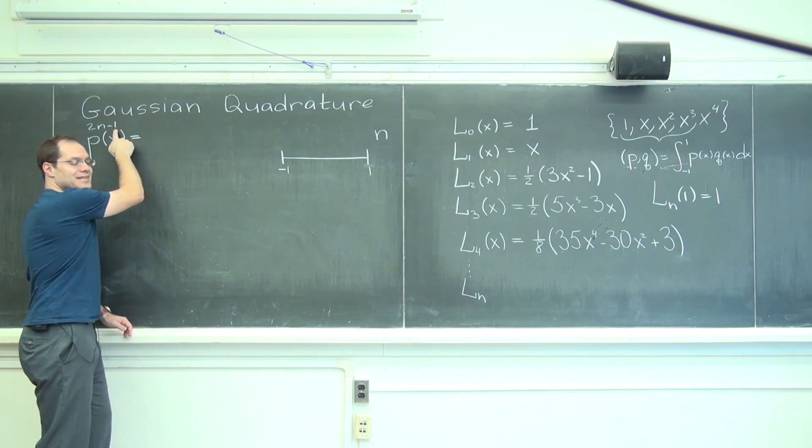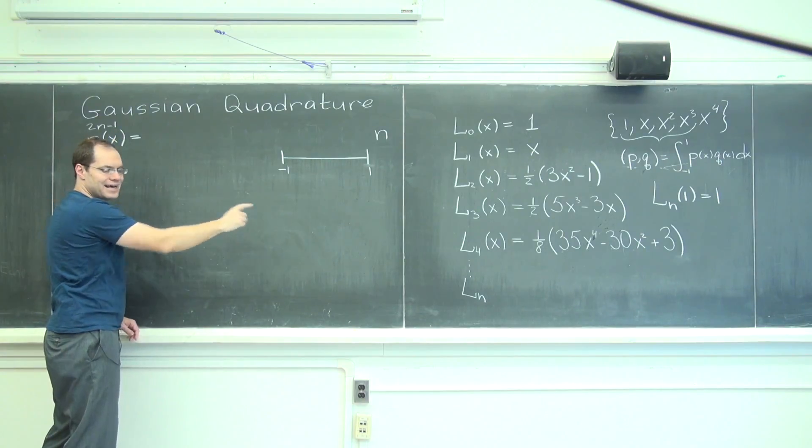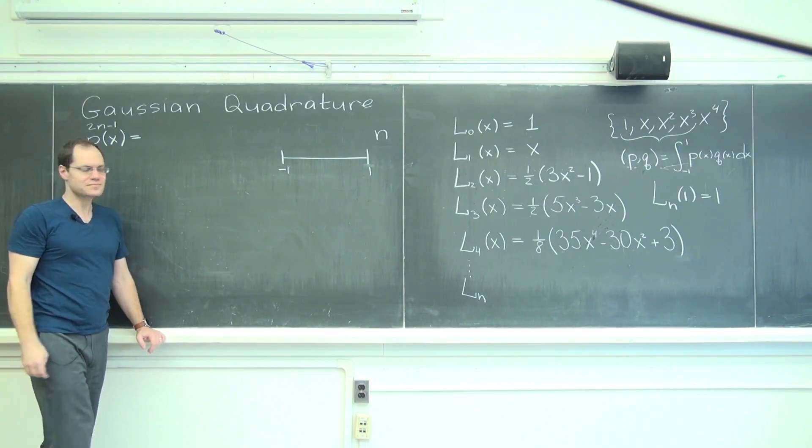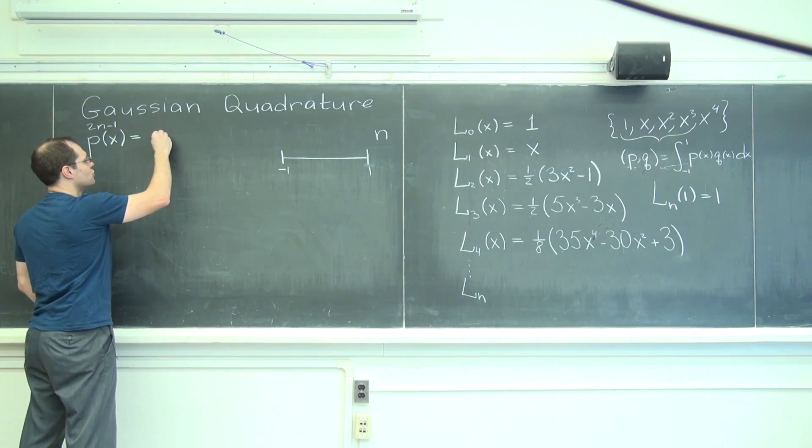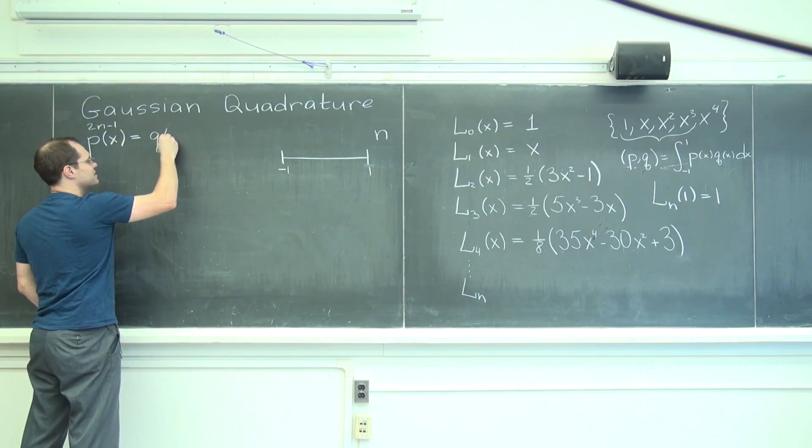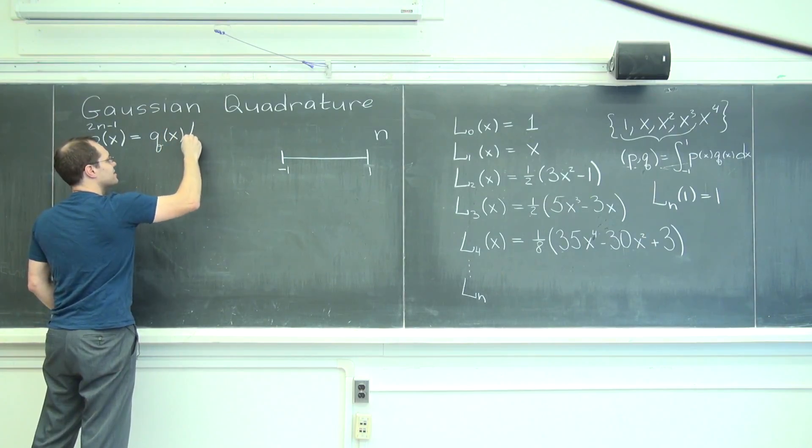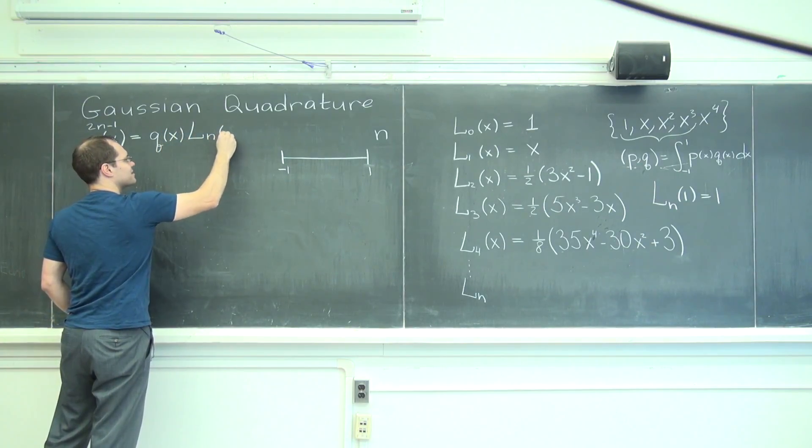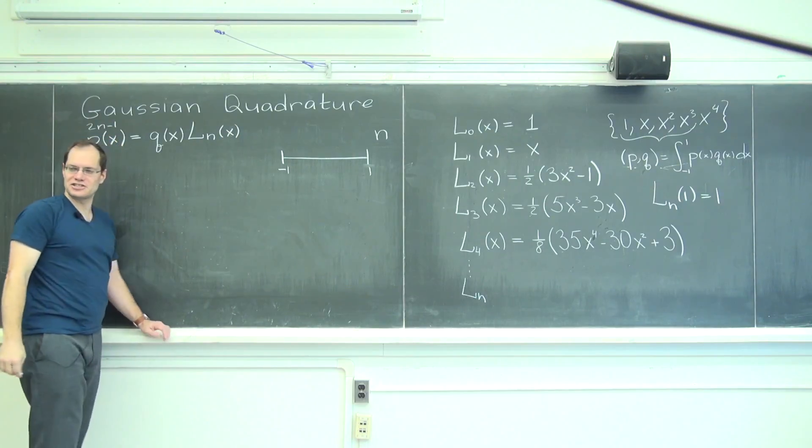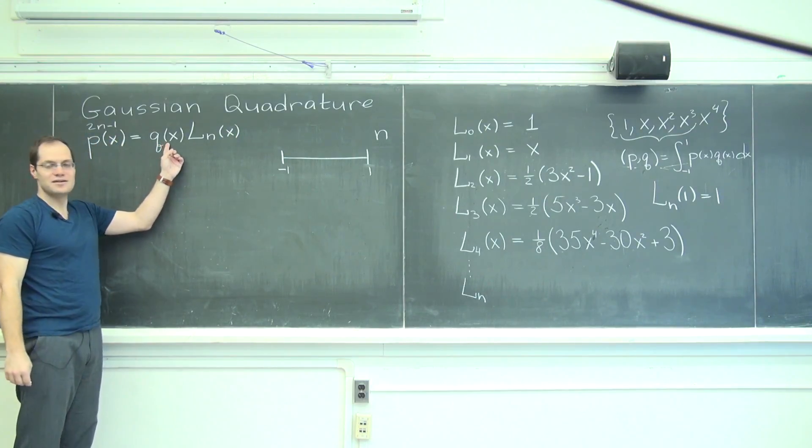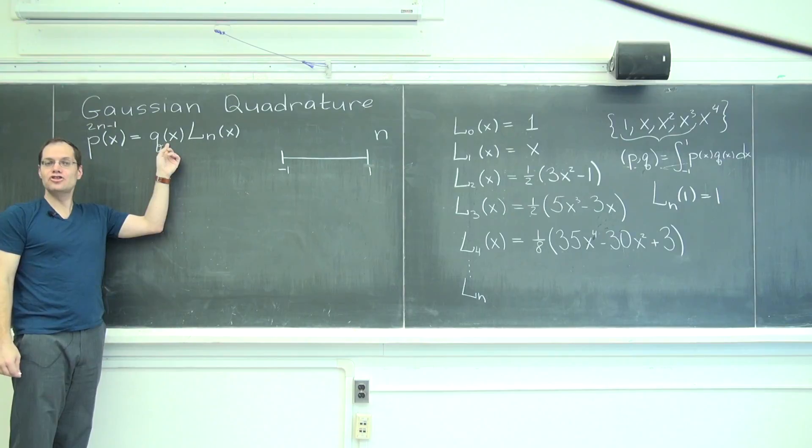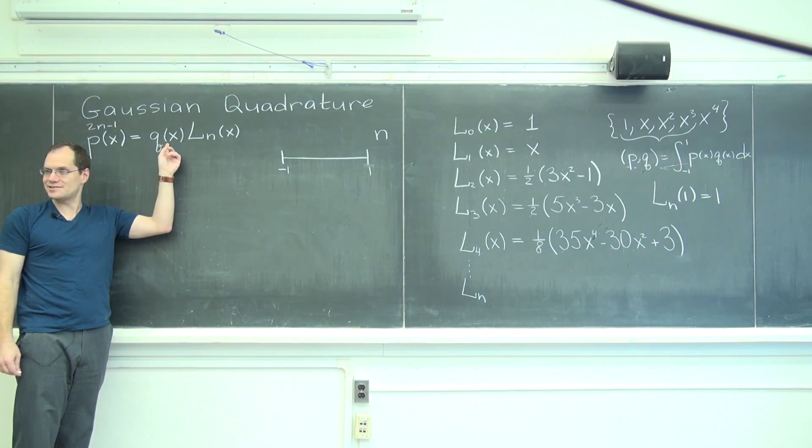Dividing 2n minus 1 by nth degree, it subtracts that degree. So I will have q(x), quotient, q(x) times L sub n of x. That's my division. And this one will be of degree no greater than n, n minus 1 or less,